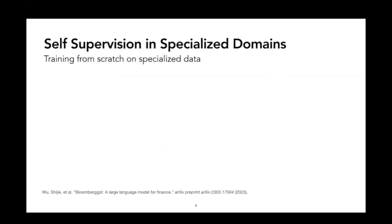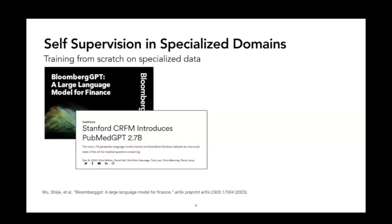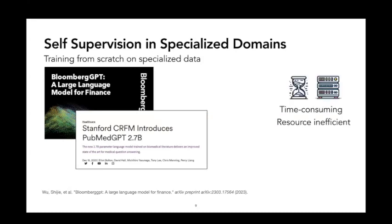We can train specialized LLMs from scratch by using self-supervised learning objectives like next-word prediction from data obtained from specialized domains. And this works reasonably well when trained on lots of data. But this approach is both time-consuming and resource-inefficient.